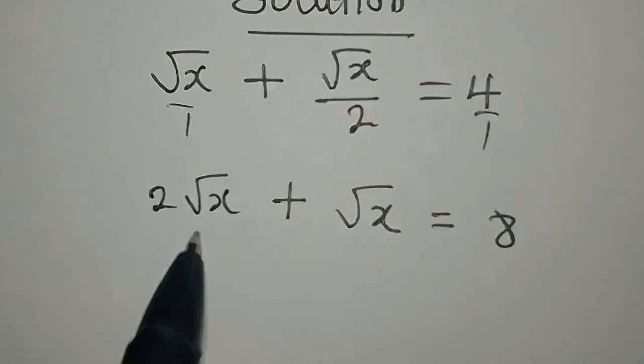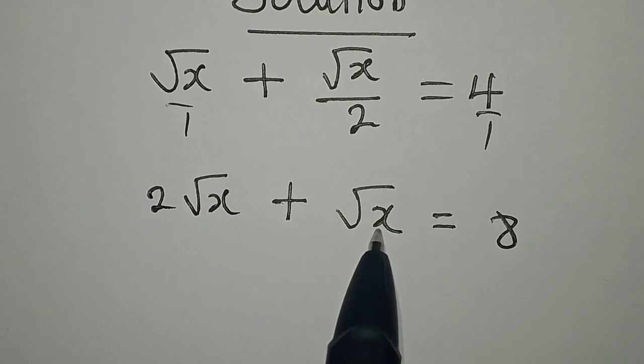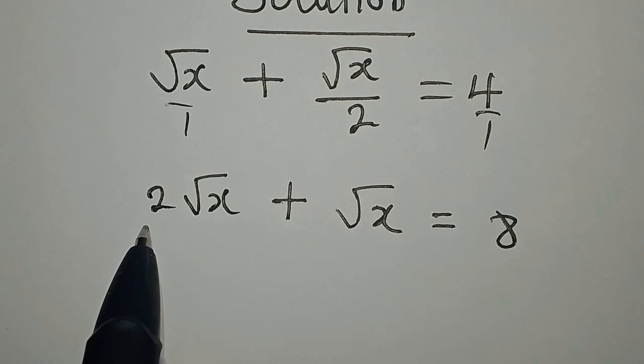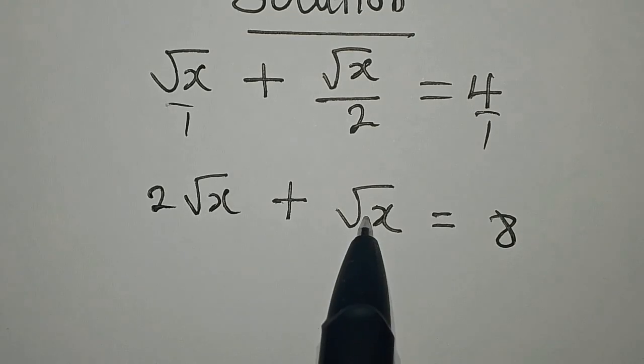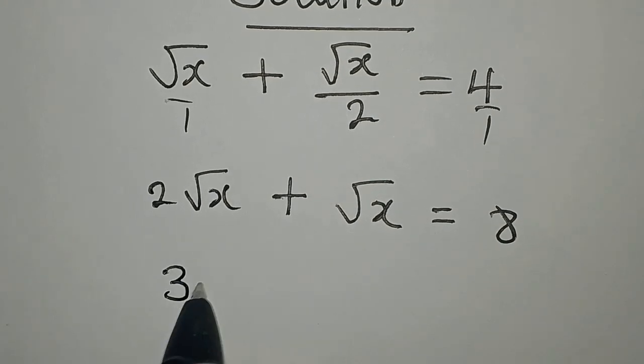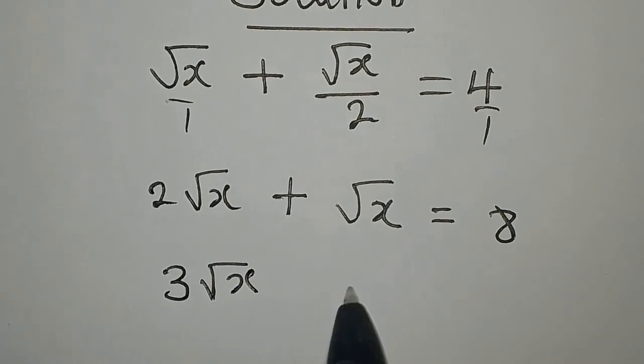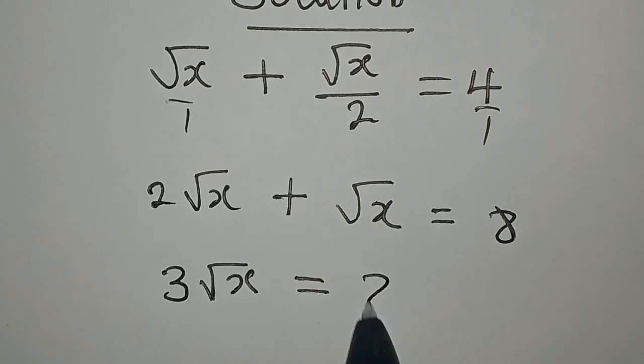Now we can add this and this already because we have an invisible one here. 2√x plus √x will give us 3√x, and this is equal to 8.